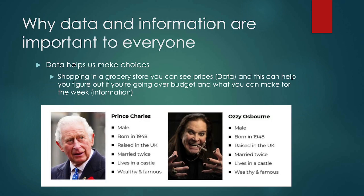Data and information help us make choices. When you're shopping in a grocery store you probably see prices — that data can help you figure out if you're going to go over budget. Most of us have some variety of budget for basically everything we do: a grocery budget, utilities budget, rent or mortgage budget, and being able to see the prices of different things we're buying helps us figure that out. Now, one important thing to note is that data can also be misleading. Data and information are important, but if you don't have the correct context, you're not necessarily going to get anything valuable out of it.